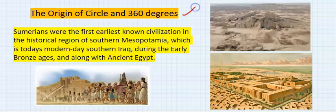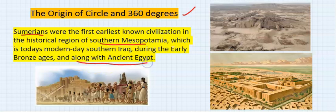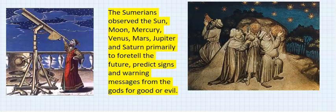The origin of circle and 360 degrees. Sumerians were the first earliest known civilization in the historical region of southern Mesopotamia, which is today's southern Iraq, during the early Bronze Ages. Along with ancient Egypt, the Sumerians observed the sun.